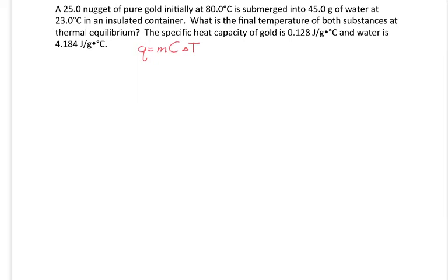So when we're interested in calculating heat, the equation that we want to use is that heat, or Q, is equal to the mass in grams times the specific heat capacity in joules per gram times degrees Celsius times the change in temperature in either Kelvin or Celsius, whichever we want to use.